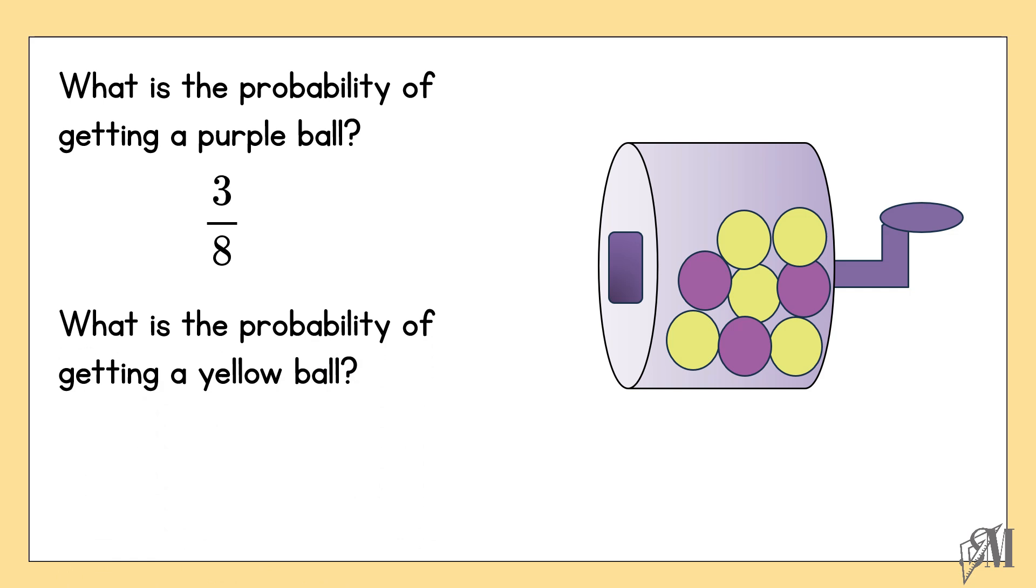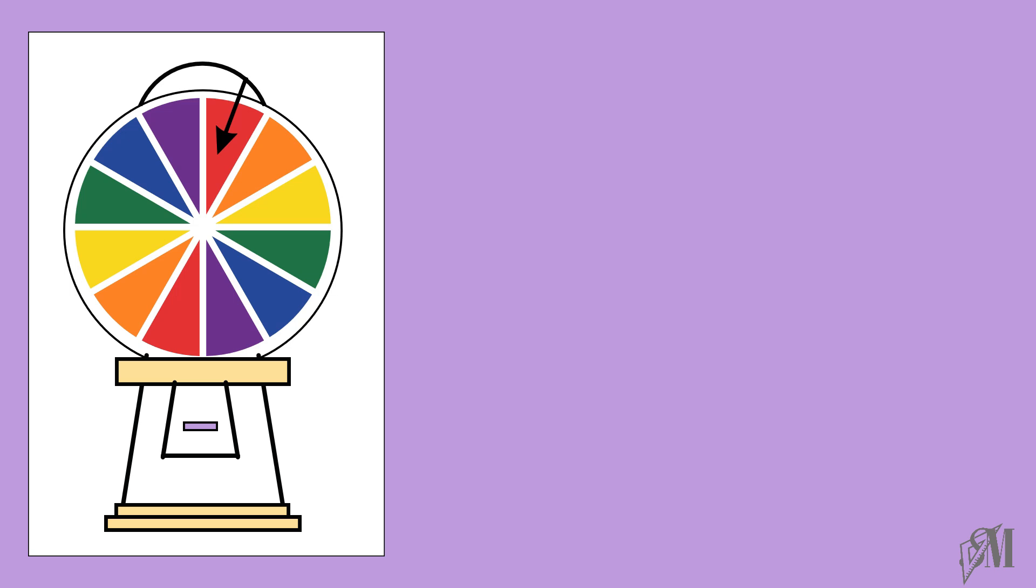The next question says what is the probability of getting a yellow ball? So there are 5 yellow balls. Therefore, the probability becomes 5 over 8. Let us look into another question.